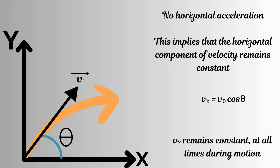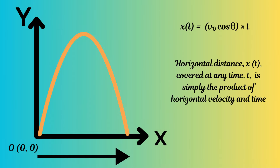Because of zero horizontal acceleration, the horizontal x-component of velocity remains the same throughout the projectile's motion — equal to v₀ cosine theta. This also means that the horizontal distance covered at any time during the projectile's motion is simply the horizontal component of the velocity multiplied by the time it has been in motion.